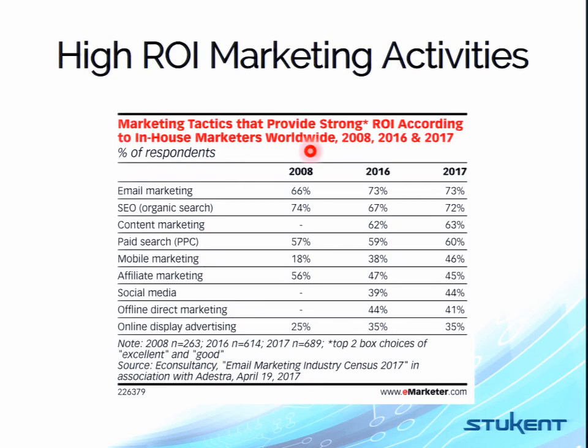Here we have marketing tactics that provide a strong ROI according to in-house marketers worldwide. Email marketing shows 73% ROI — you can't ignore emails. SEO comes in at 72%. Social media in 2017 was only 44%.